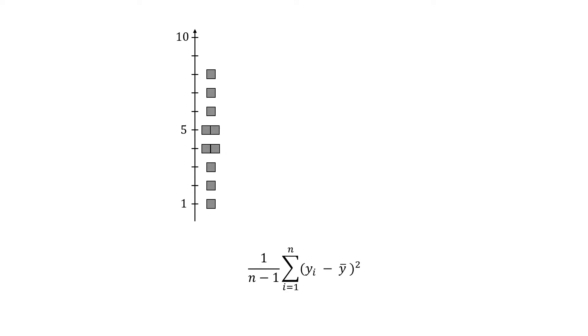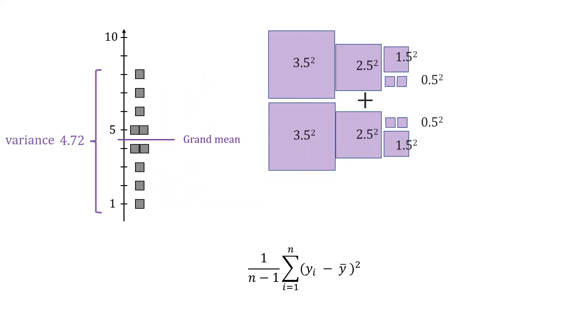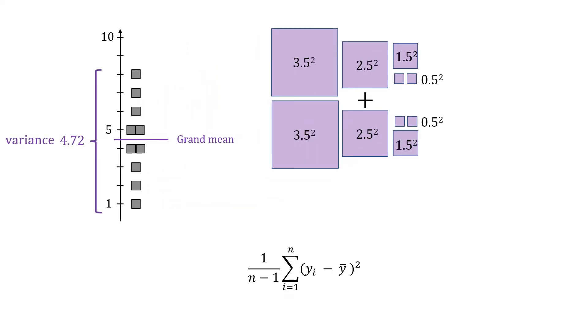First a reminder what variance is. I have a whole video about variance but a brief summary here. The variance is one measure of spread of your data. To calculate the variance of a variable you subtract the mean of this variable from every data point and you square the differences. Next you add them all up and then divide them by the number of data points, or in this case by the degrees of freedom which is the number of data points minus one. We will use degrees of freedom for the remainder of this video but it also applies to the case when you divide by n instead of n minus one. The variance of this variable is 4.72.